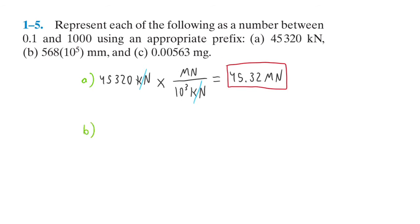Part B: We have 568 times 10 to the 5th millimeters. So again, we want to convert this to a prefix where the number shrinks. So we can only do that with kilometers.